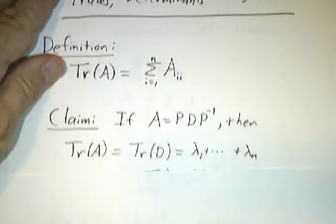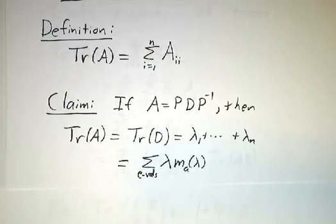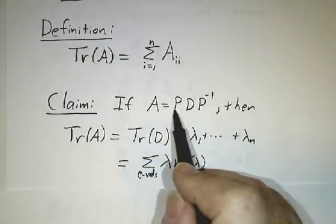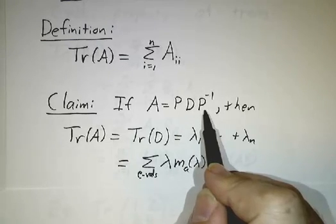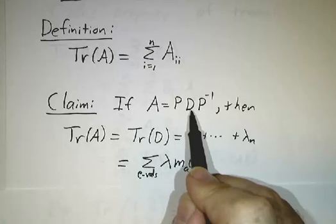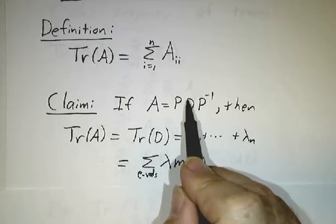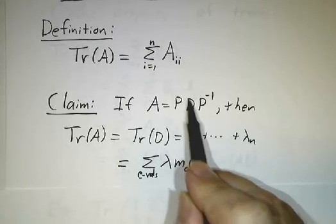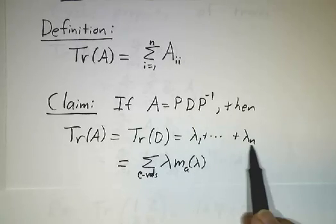I claim that if a matrix is diagonalizable, if you can write A as PDP inverse, then the trace of A is the same as the trace of D. The matrix D has all the eigenvalues on the diagonal, and if you add them up, you get the sum of the eigenvalues.